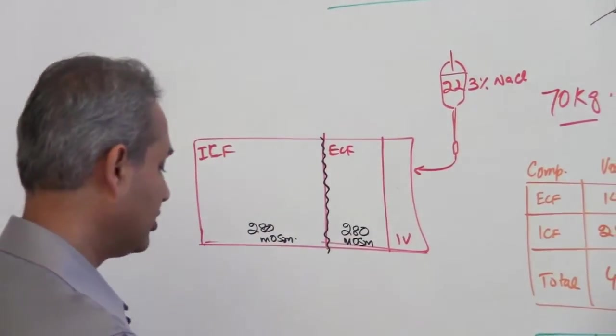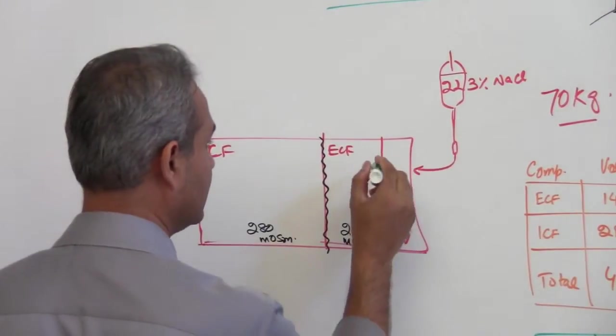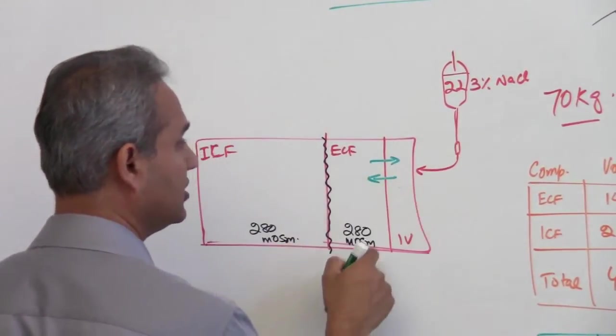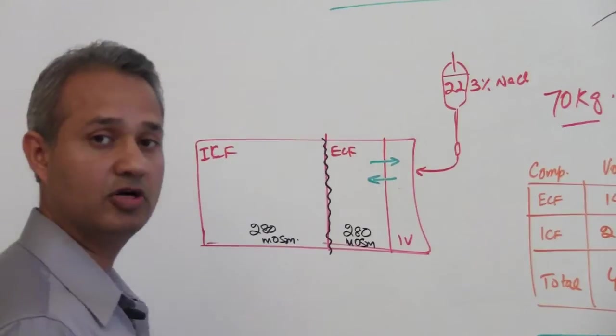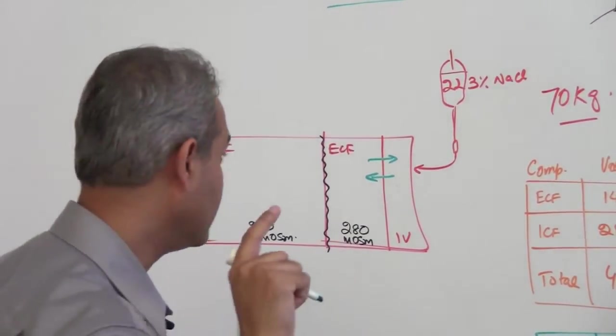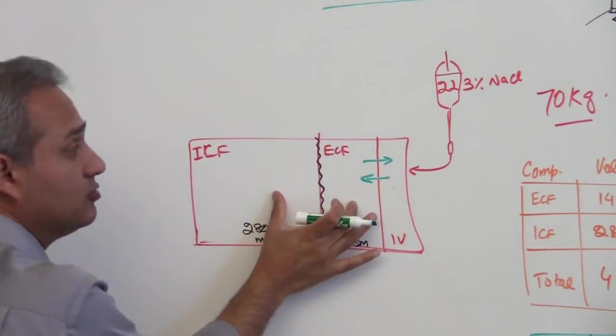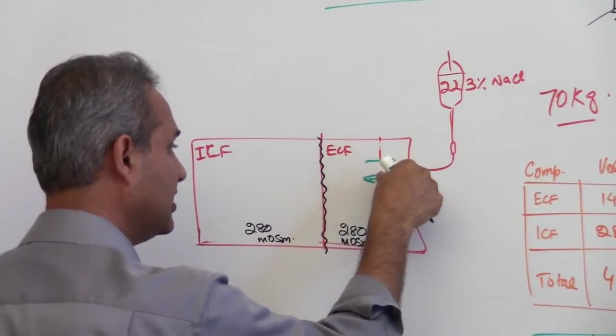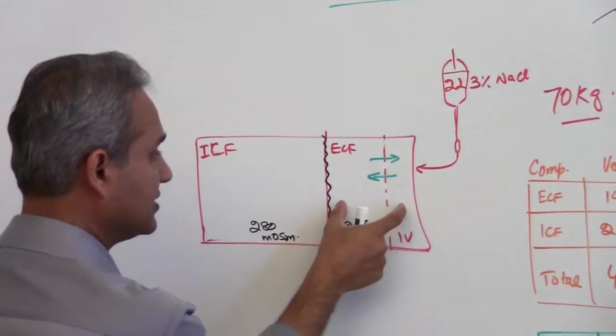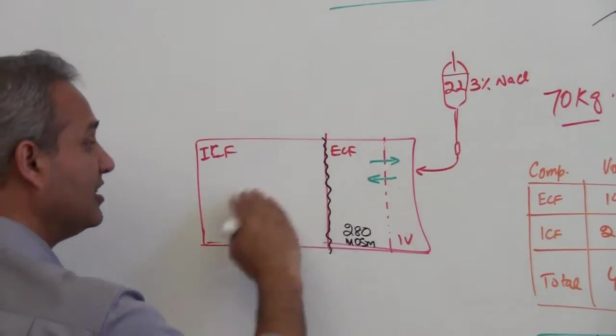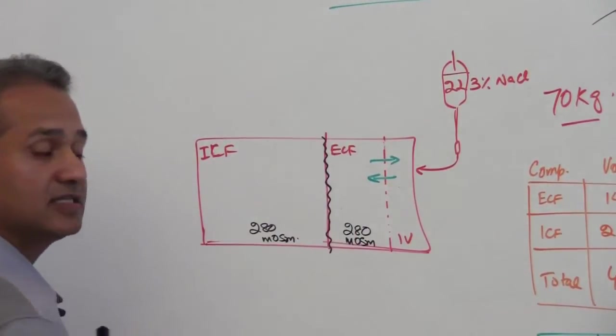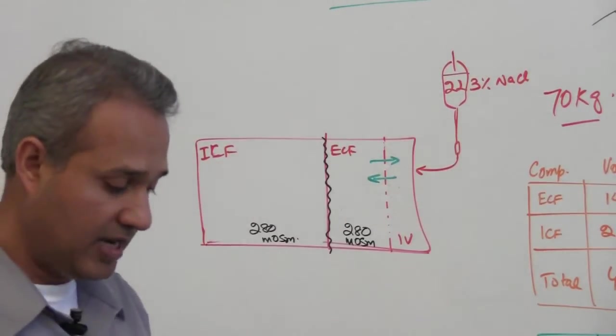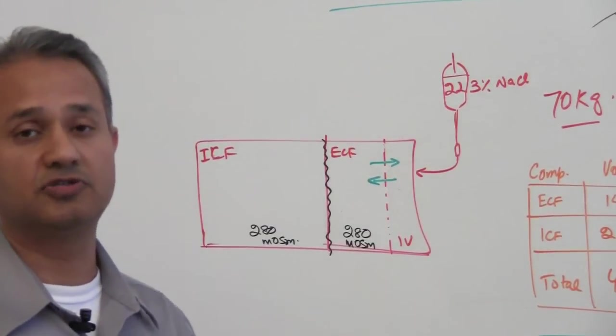So we talked about it, the movement of fluid in this compartment, the factors here are oncotic pressure and hydrostatic pressure, but the movement of fluid between these two compartments, for all practical purposes I can take actually this line out and I can say this is ECF and this is ICF. So movement between these two compartments is governed by the solute concentrations.